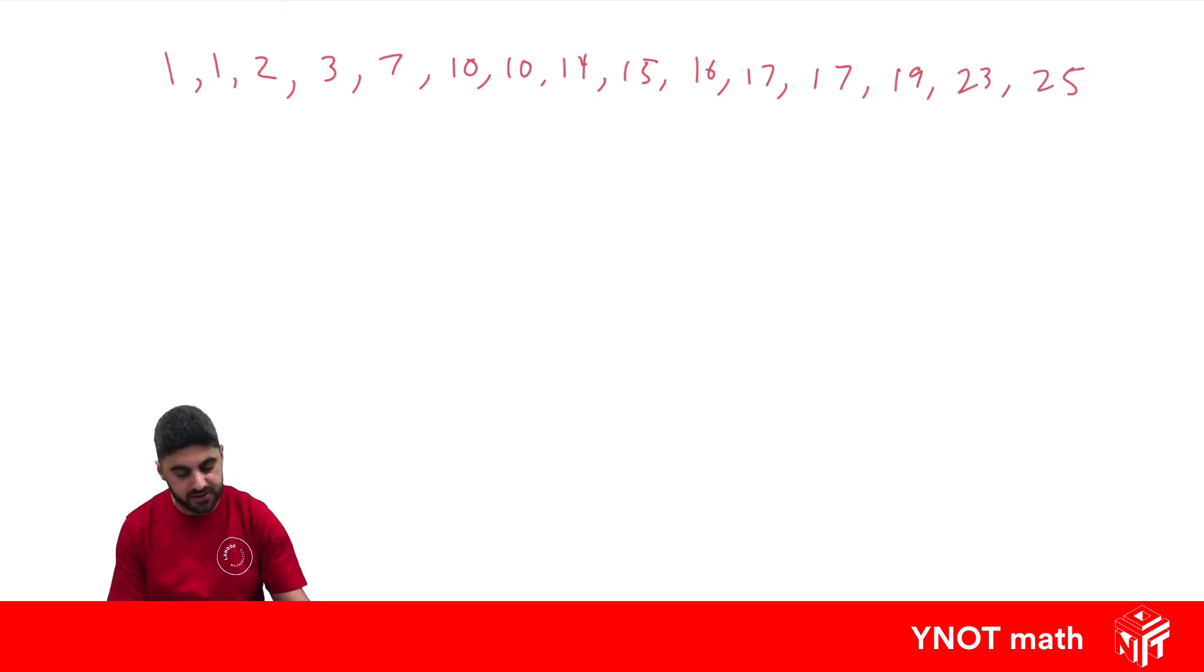And we want to record this data in a stem and leaf plot. So to do that we're going to write stem and leaf and do a line here and a line like this. Now the stem is the first digit. Sorry, it represents the tens unit in all of these numbers.